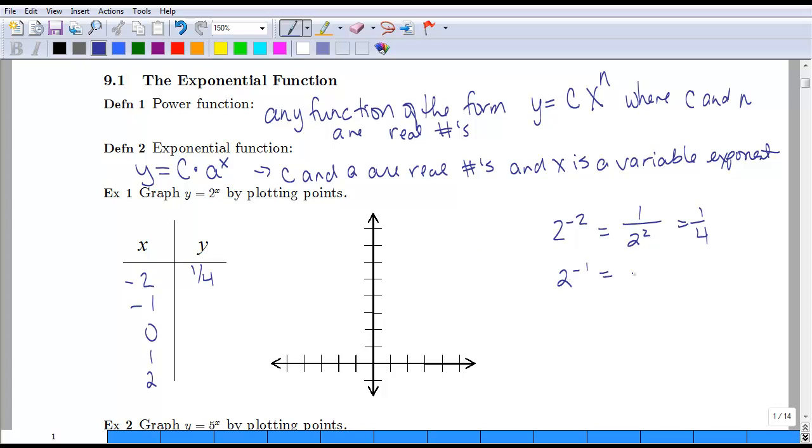Likewise, if we have two to the negative one, that's going to flip it over to be two to the first, which is just one-half. If we plug in two to the zero, that's anything to the zero power is one. If we have two to the first, this is just two. And if we have two squared, we get four.